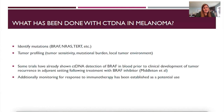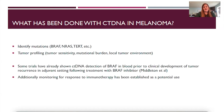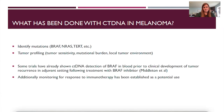What has been done with ctDNA and melanoma? It can identify mutations like BRAF and RAS-TERT, and you can use it for tumor profiling including mutational burden and the local tumor environment. Some trials have already shown ctDNA detection of BRAF in the blood prior to the clinical development of tumor in an adjuvant setting — specifically Middleton et al. — where patients with BRAF mutation could have BRAF identified in the blood via ctDNA prior to scans showing tumor. ctDNA is also being used as a monitoring tool in response to immunotherapy, and there is a company that has this indication as part of their FDA approval.